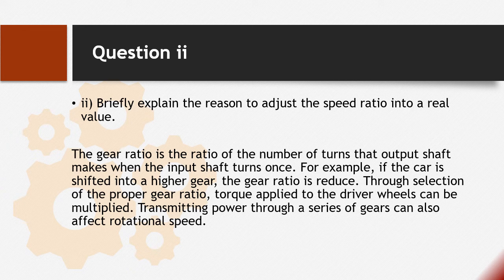For question 2, explanation on the reason to adjust the speed ratio into a real value. The gear ratio is the ratio of the number of turns that output shaft makes when the input shaft turns once. For example, if the car is shifted into a higher gear, the gear ratio is reduced. Through selection of the proper gear ratio, torque applied to the driver wheels can be multiplied. Transmitting power through a series of gears can also affect rotational speed.